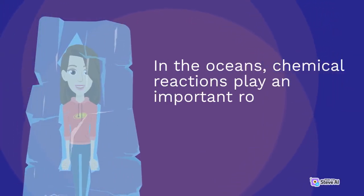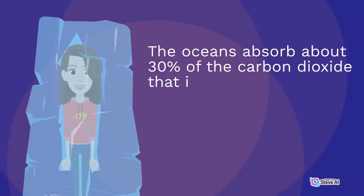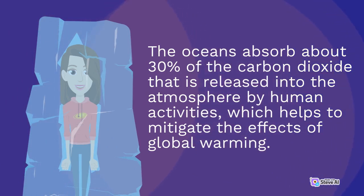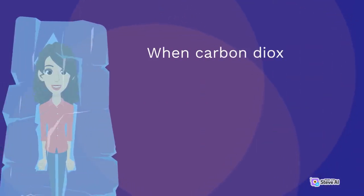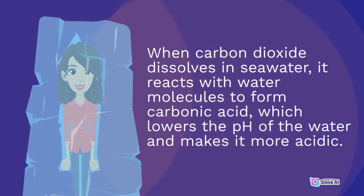In the oceans, chemical reactions play an important role in regulating the earth's carbon cycle. The oceans absorb about 30% of the carbon dioxide that is released into the atmosphere by human activities, which helps to mitigate the effects of global warming. When carbon dioxide dissolves in seawater, it reacts with water molecules to form carbonic acid, which lowers the pH of the water and makes it more acidic.